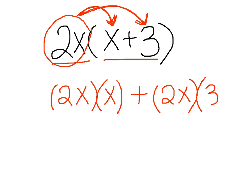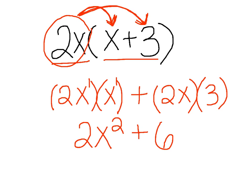If we simplified this out, we had 2x times x. Since both have exponents of 1, that gives us 2x squared, because we keep the base and add the exponents. Then plus 2x times 3 — so 2 times 3 is 6 times x, giving us plus 6x.